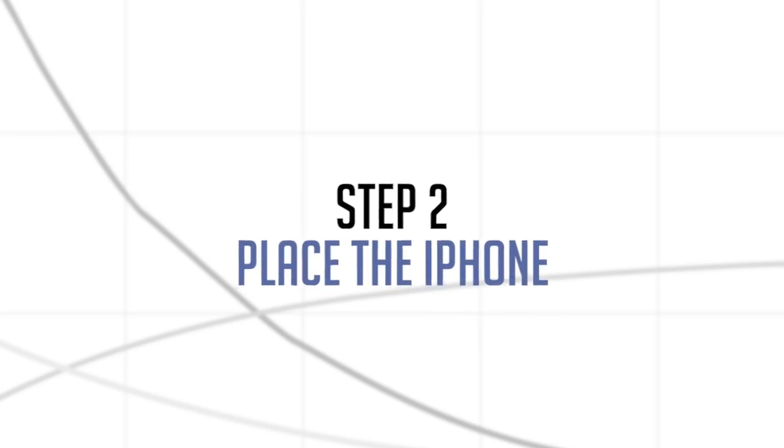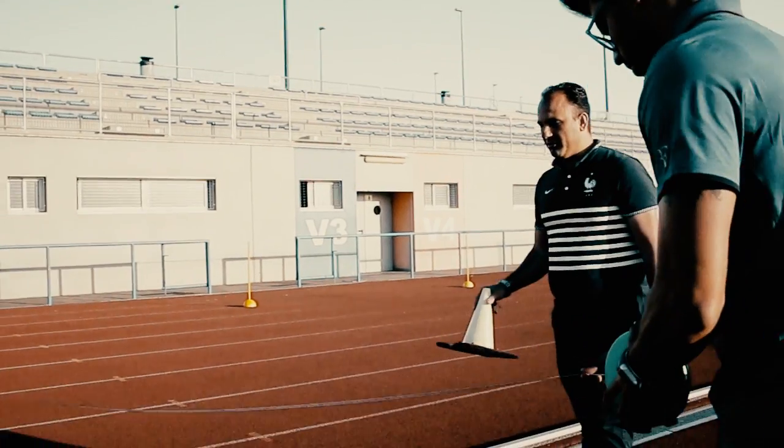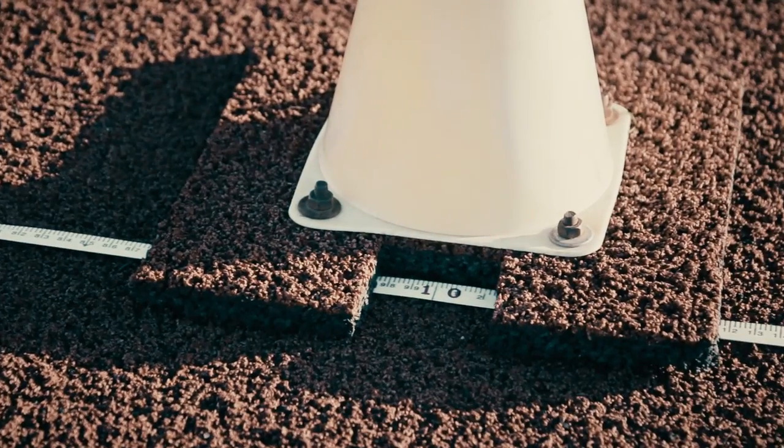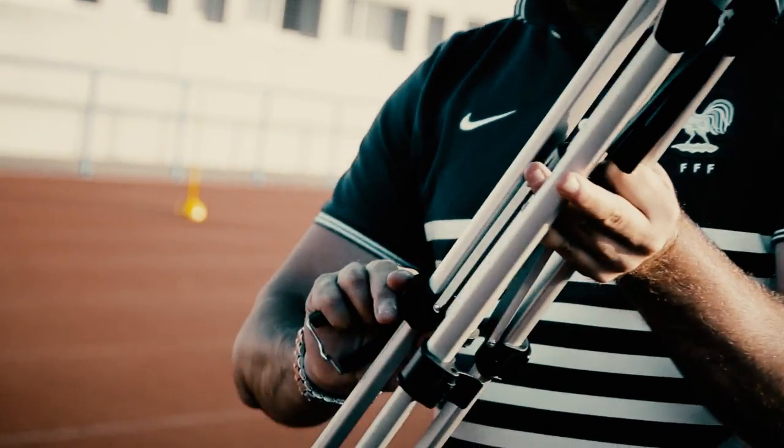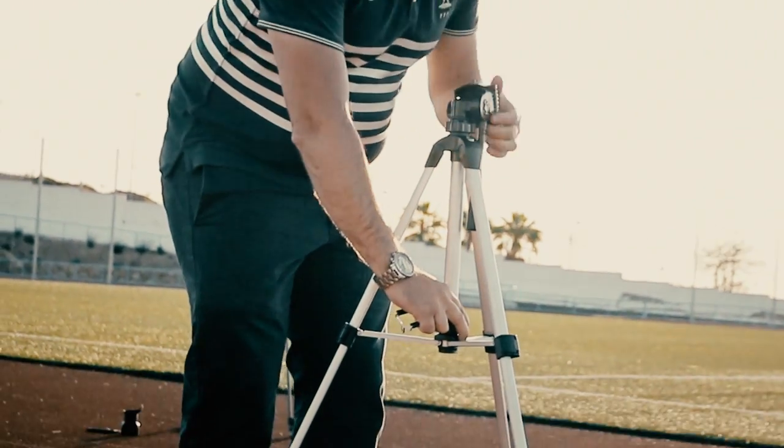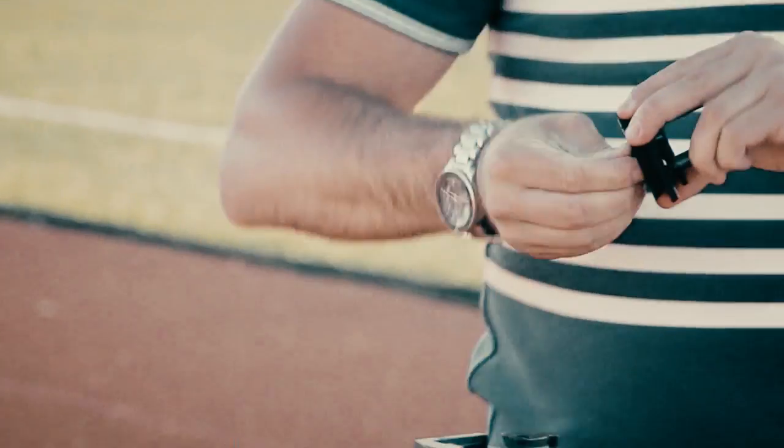Step 2: Place the iPhone. You should place the iPhone 10 meters from the center of the track. It's highly recommended to use a tripod in order to smooth recording.